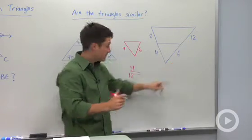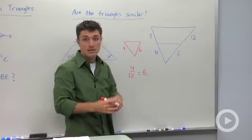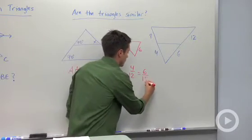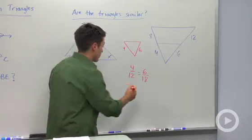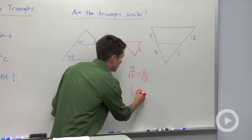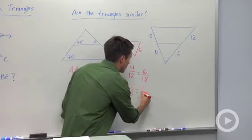And then over here we have six, and the whole side is 18, six plus 12. So if I reduce these four twelfths, I can divide those both by four, and I can get one third. And here I can divide both these numbers by six, and I get one third.